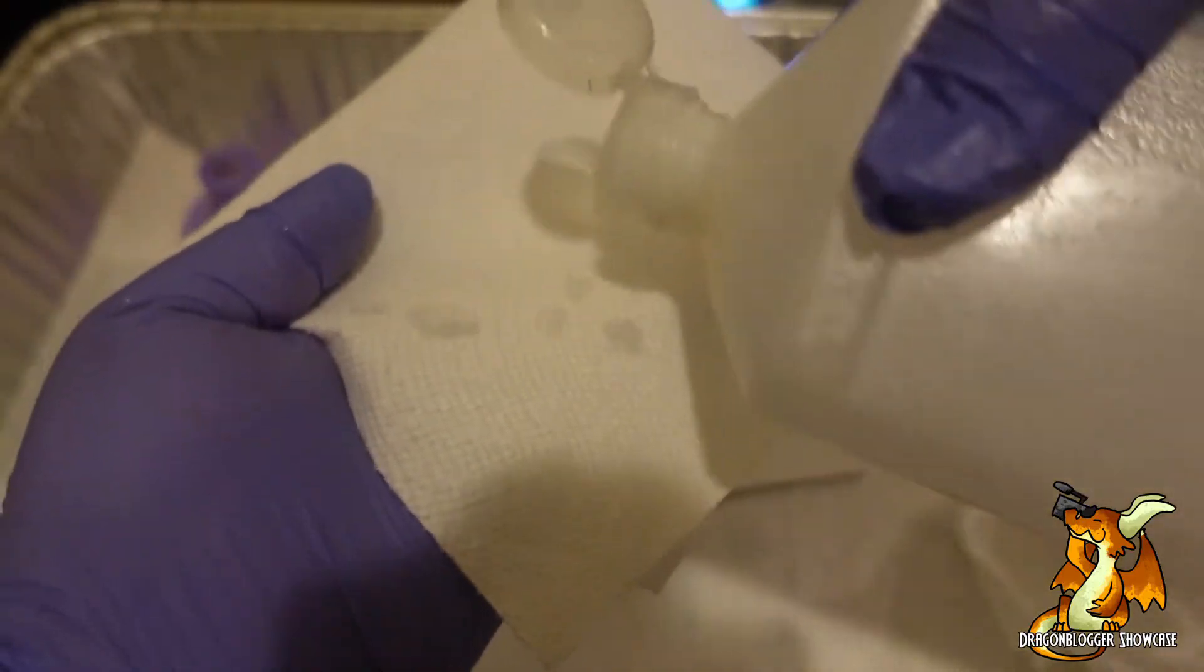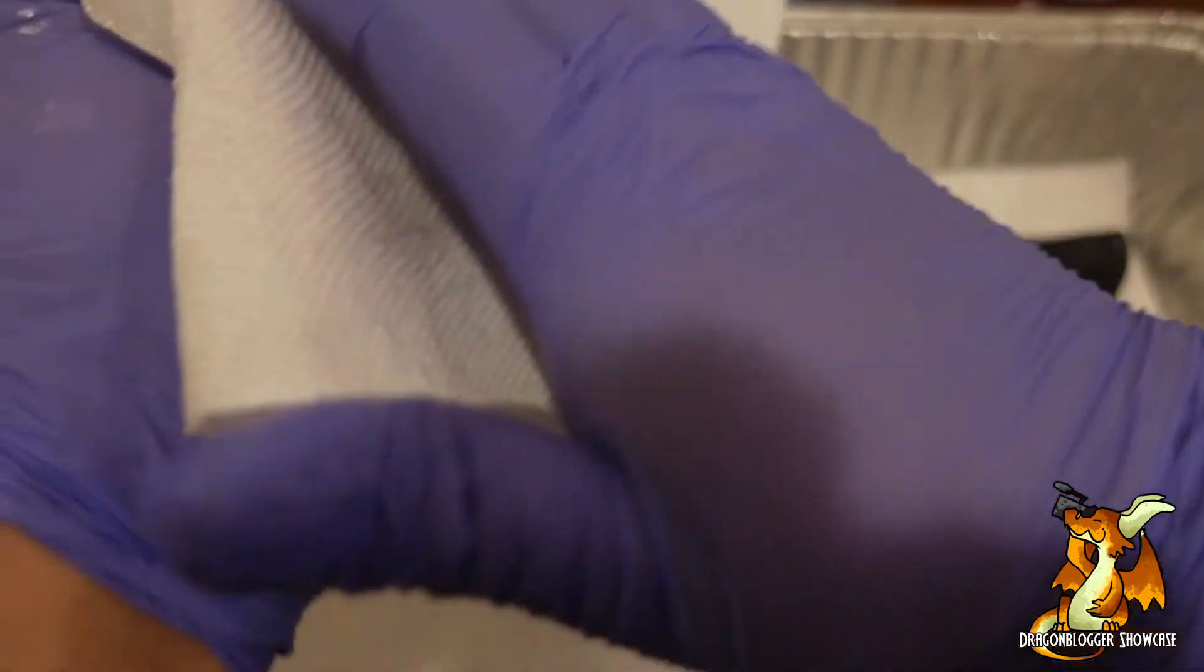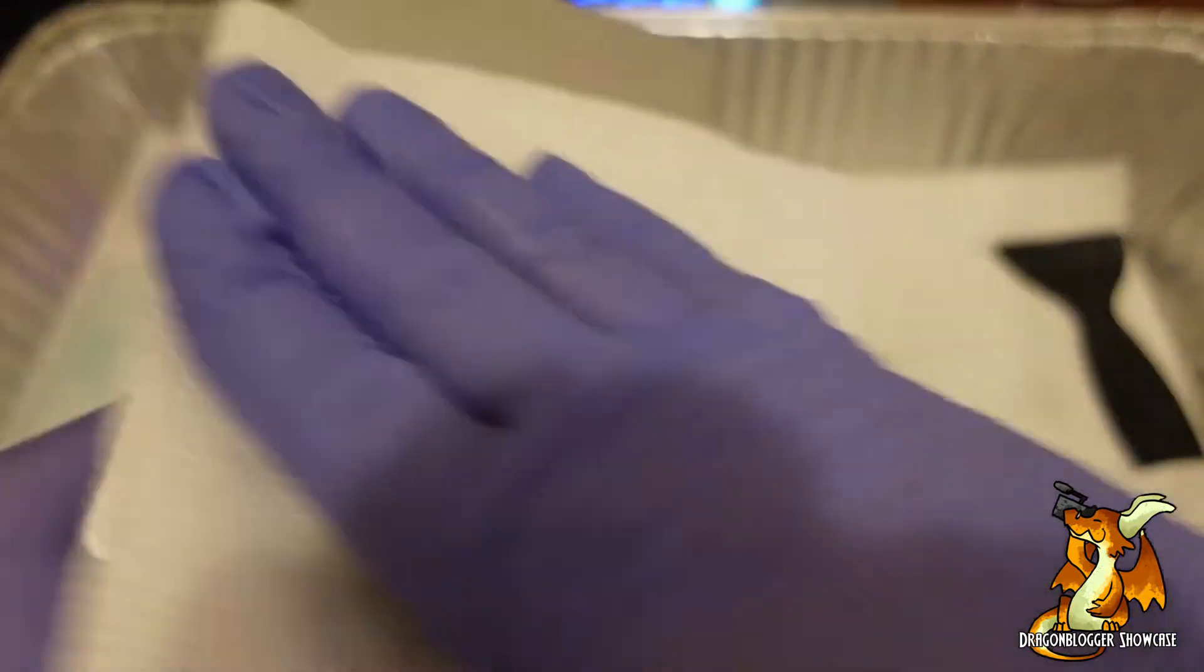Now I'm going to take a fresh paper towel, get some alcohol on here, and I'm just going to wipe this area clean. You shouldn't have to scrub. You shouldn't have to literally lay into this. This is just to get the excess resin off.